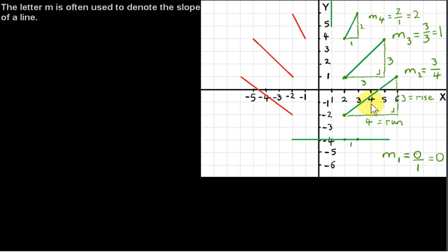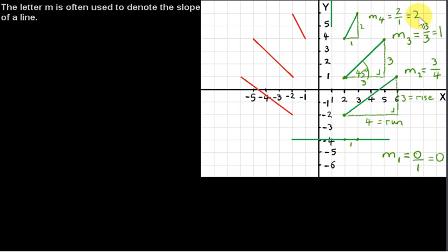We see that the slopes are going from zero to three quarters to a slope of one. A line with a slope of one makes a 45-degree angle with the x-axis. The next line has a slope of two, so the lines are getting steeper.